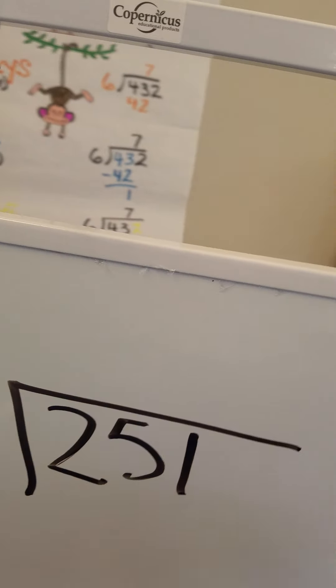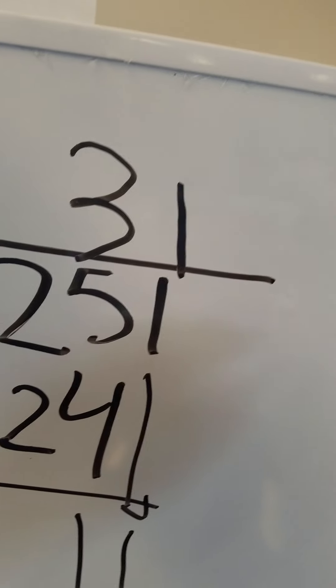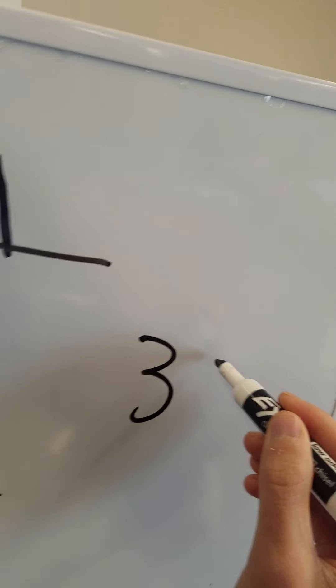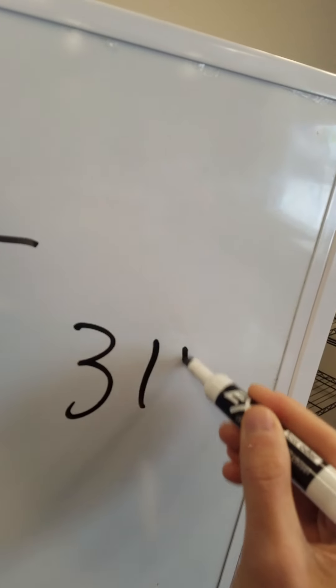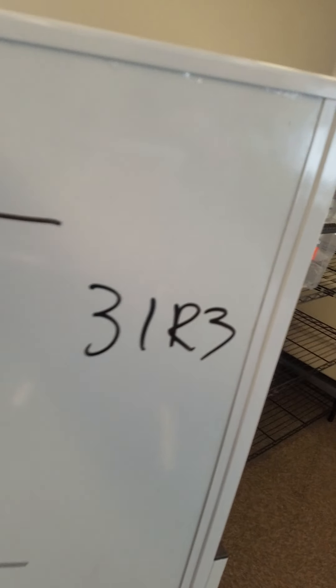All right Jackson Vargas special guest celebrity guest extraordinaire. What is our final answer? 31 remainder 3. Yes 31 remainder 3. We're not going to work with decimals today. We're just going to review our long division.